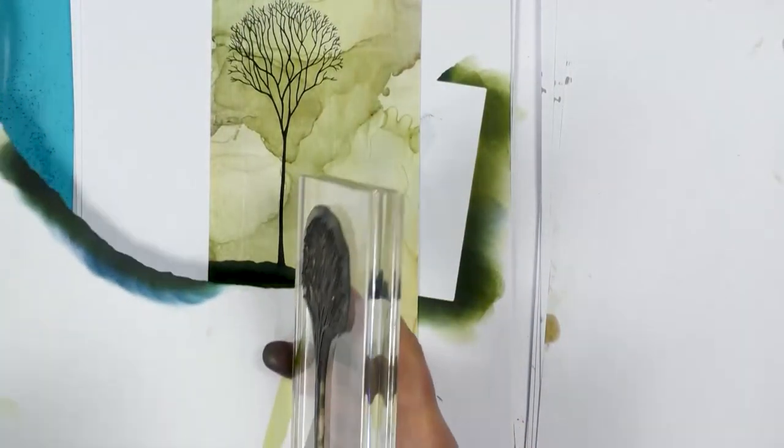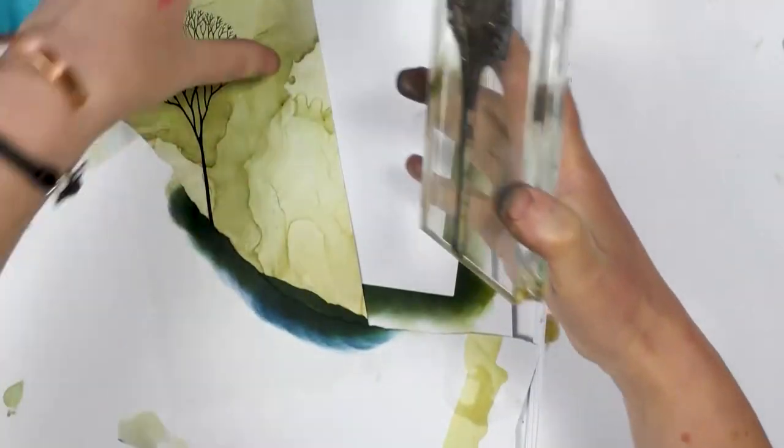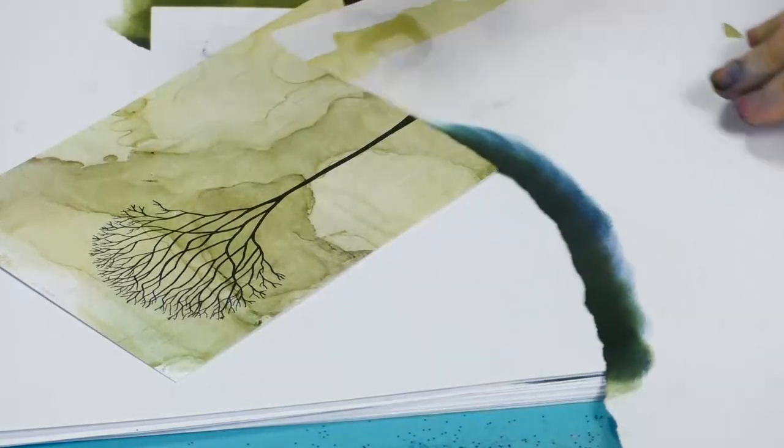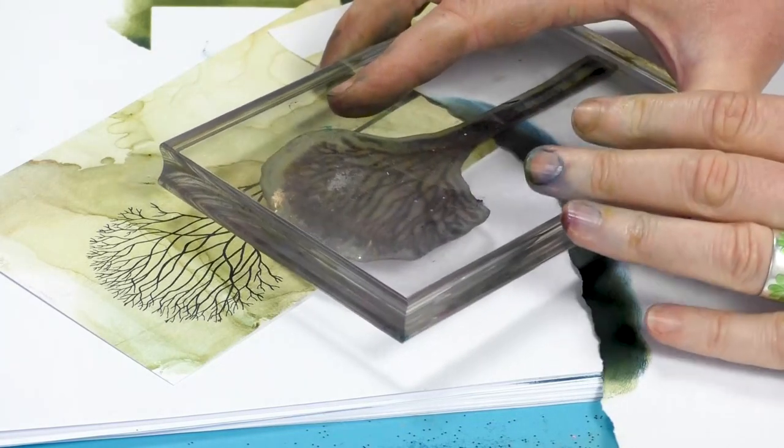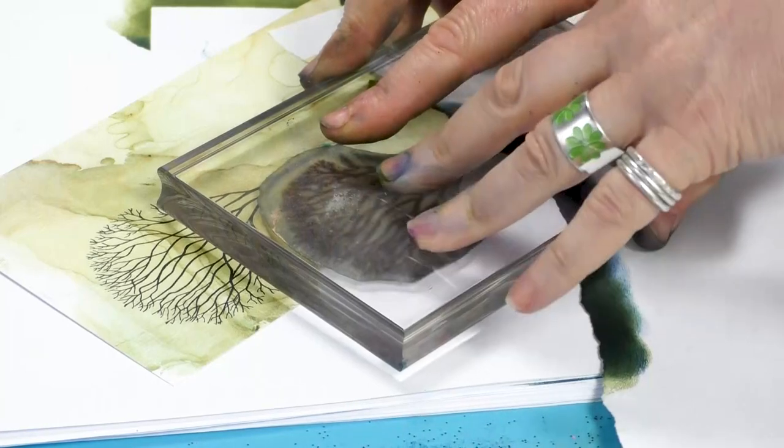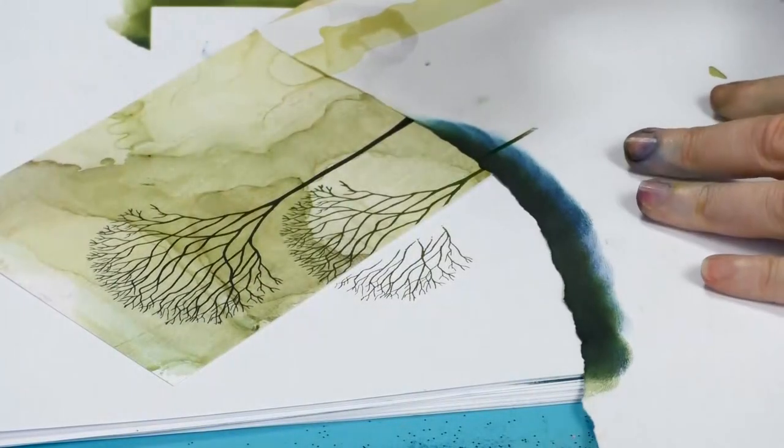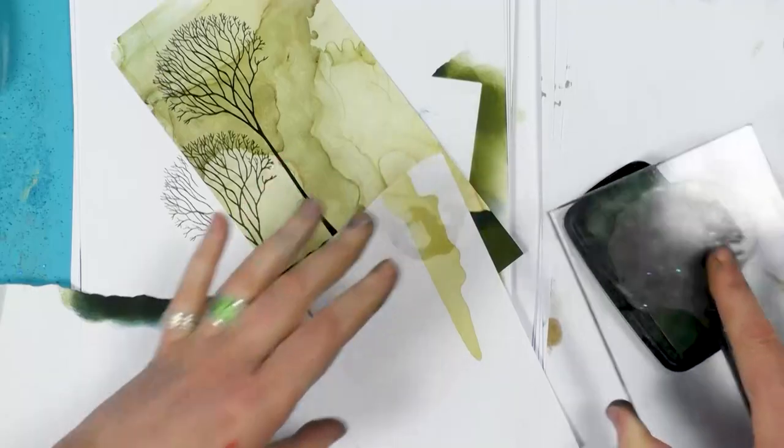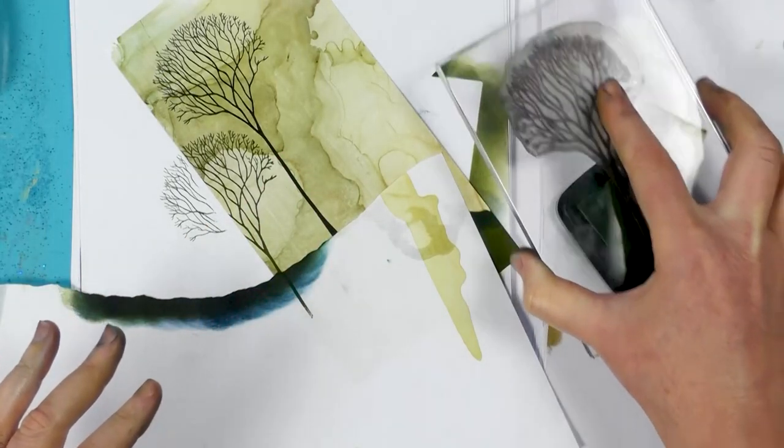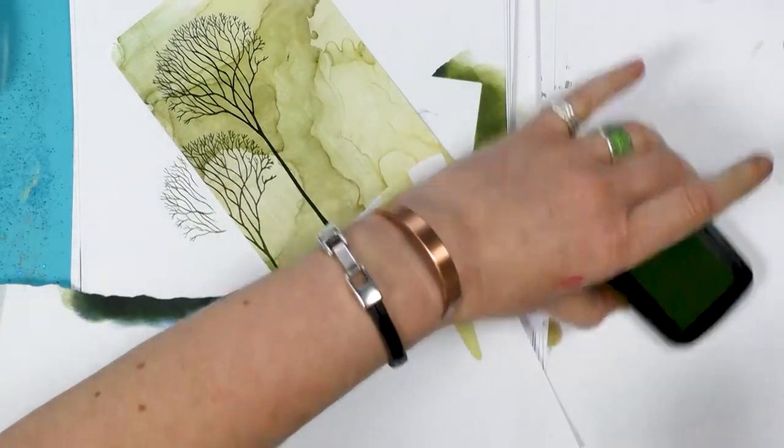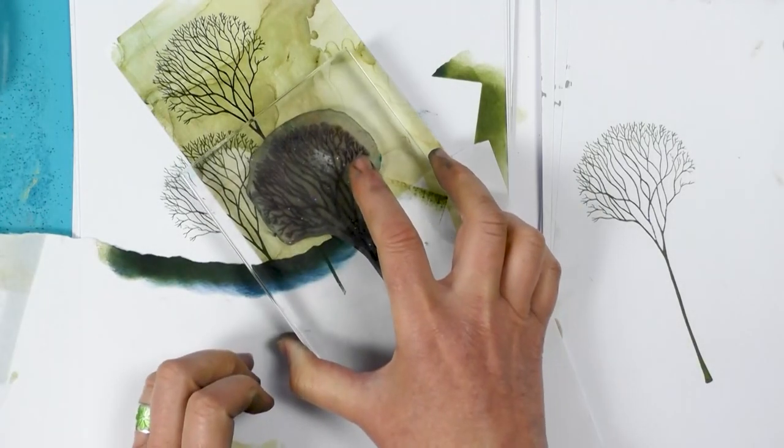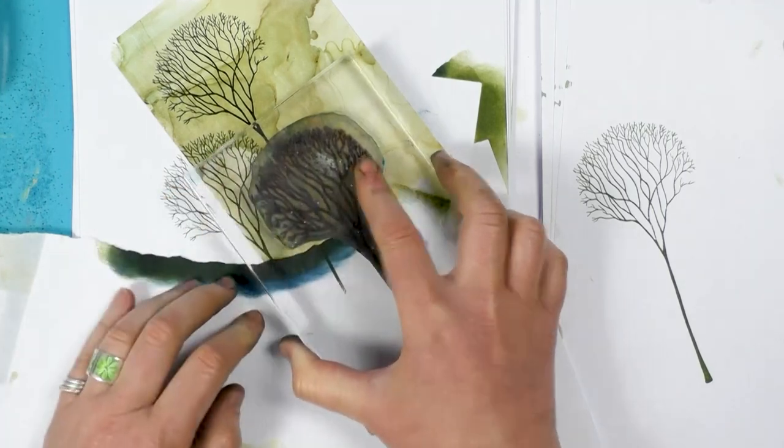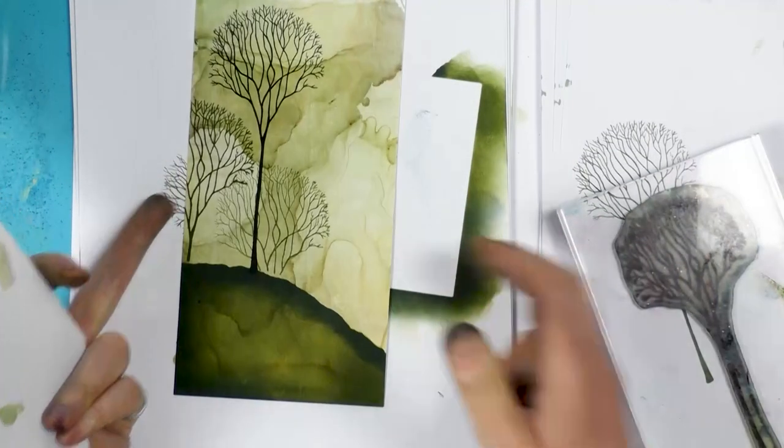I'm just going to mask that area off. And pop another tree down here. And I'm going to do the same again. Except this time I'm going to stamp off. And then we're going to do another one down here.